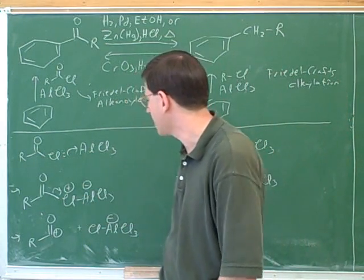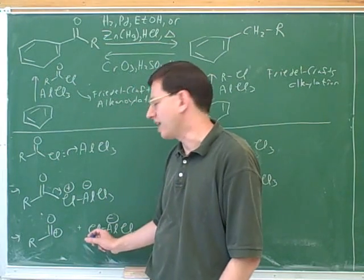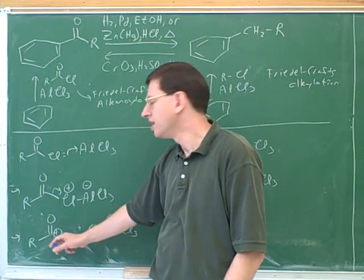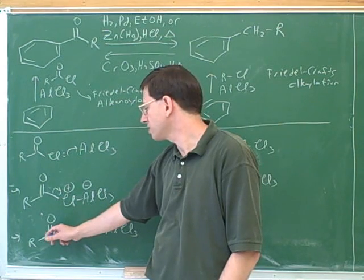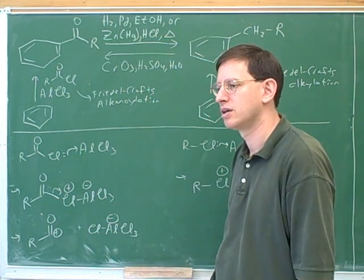So in the Friedel-Crafts alkylation, we tend to get carbocations or primary carbons with carbocation character that can have rearrangements. We don't like that. Now how is that different in the Friedel-Crafts acylation? Well, notice that here the chlorine definitely has left. That's left a positive charge over here. Now this positive charge over here is unusually stable. What is it that's stabilizing this positive charge?